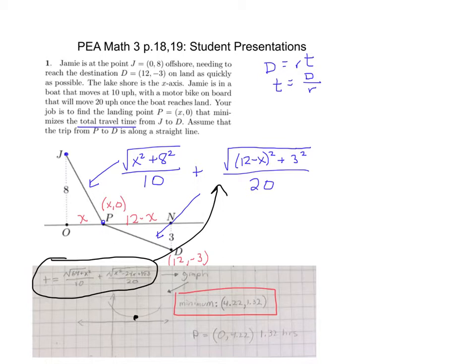The minimum value on the graph was (4.22, 1.32). So if 4.22 is x, what does that represent in our problem? It's this distance, this is x right here. So this is our minimum x. To get our minimum time, 4.22 would be that length in units. That would be our minimum units for here, and this is our minimum time. So the minimum time would be 1.32 hours.